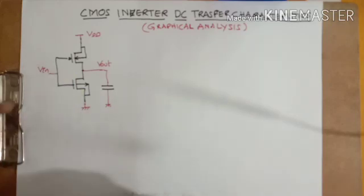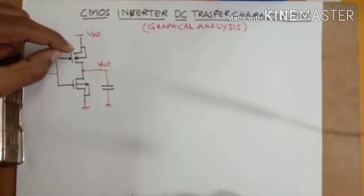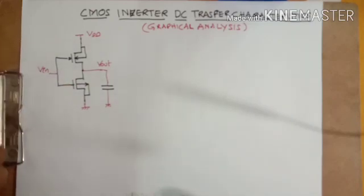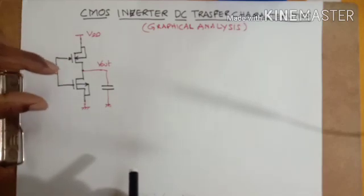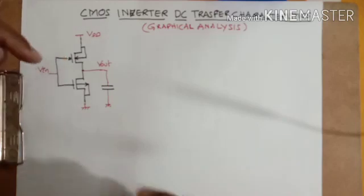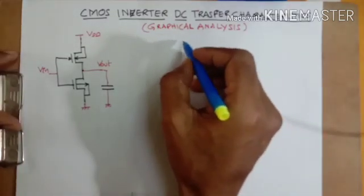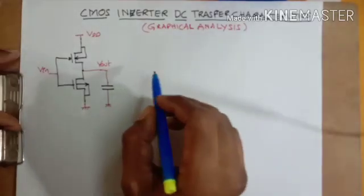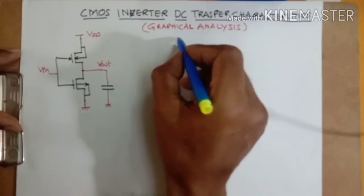We will try to understand the transfer characteristics — input voltage versus output voltage DC transfer characteristics — graphically. The assumption I am making is that the PMOS and NMOS transistors are balanced: they have the same threshold voltage and the same gain factor. The W/L ratios are adjusted such that they give the same current for a given VDS and VGS. So it is a balanced inverter, and let us draw the output characteristics of NMOS and PMOS on the same graph.